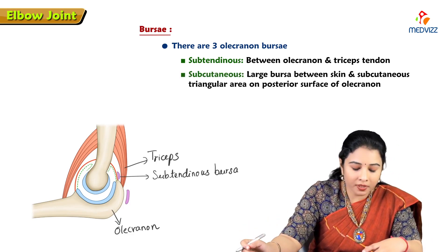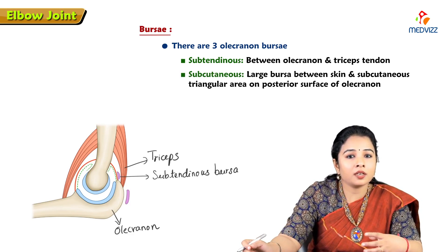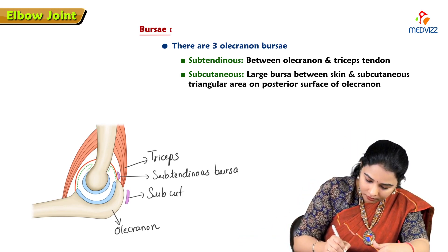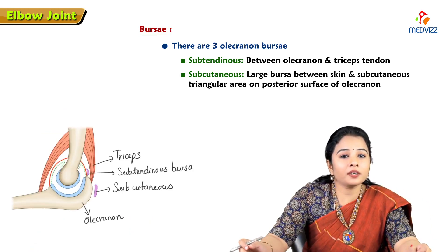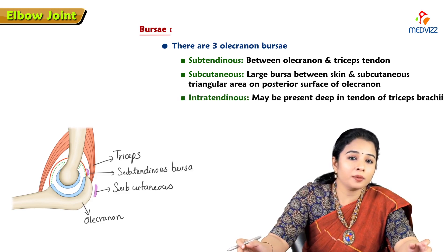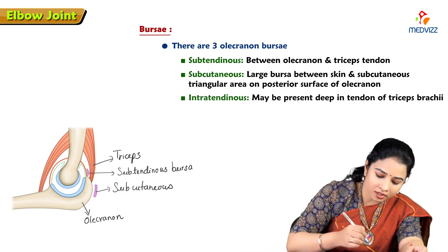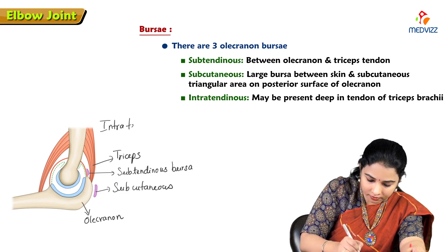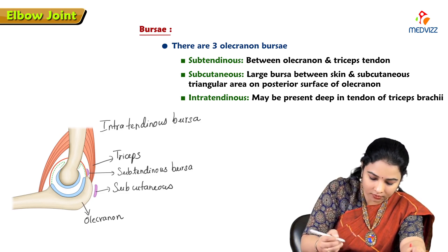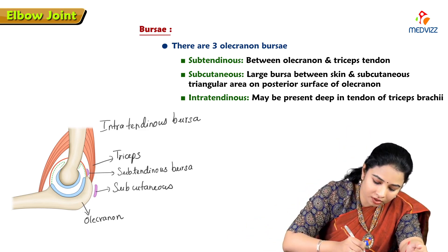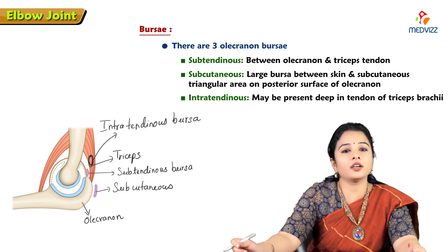The second is the subcutaneous bursa, a large bursa between the skin and the subcutaneous triangular area on the posterior surface of the olecranon process. The third olecranon bursa is the intratendinous bursa, which may be present within the tendon of triceps brachii.